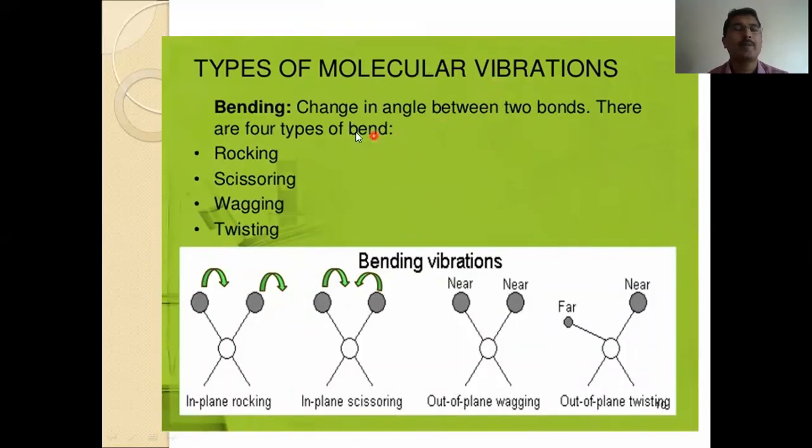Types of molecular vibration. There are four types of molecular vibration. That is bending. Changing the angle between two bonds. There are four types of bends. One is rocking, scissoring, wagging and twisting. You can observe here in this diagram. This is the direction left to right. It means both two types. That is rocking. Here simultaneously this or this. Here, in-plane scissoring. Scissoring means like this scissoring. Close, open. Close, open. That type of bending observation.